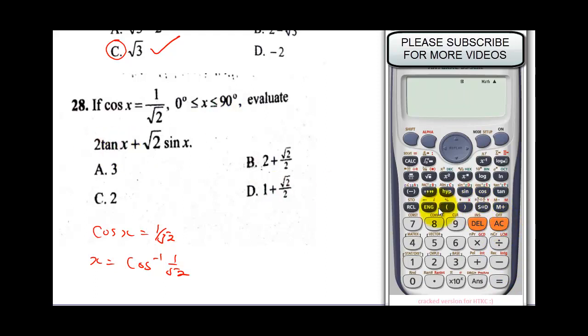Knowing our x, we're going to press 2 tan 45, or we say tan answer, plus root 2, push my arrow out, sine 45 since we know our x is 45. It will drop your answer: our final answer is 3. So the correct answer here is A.